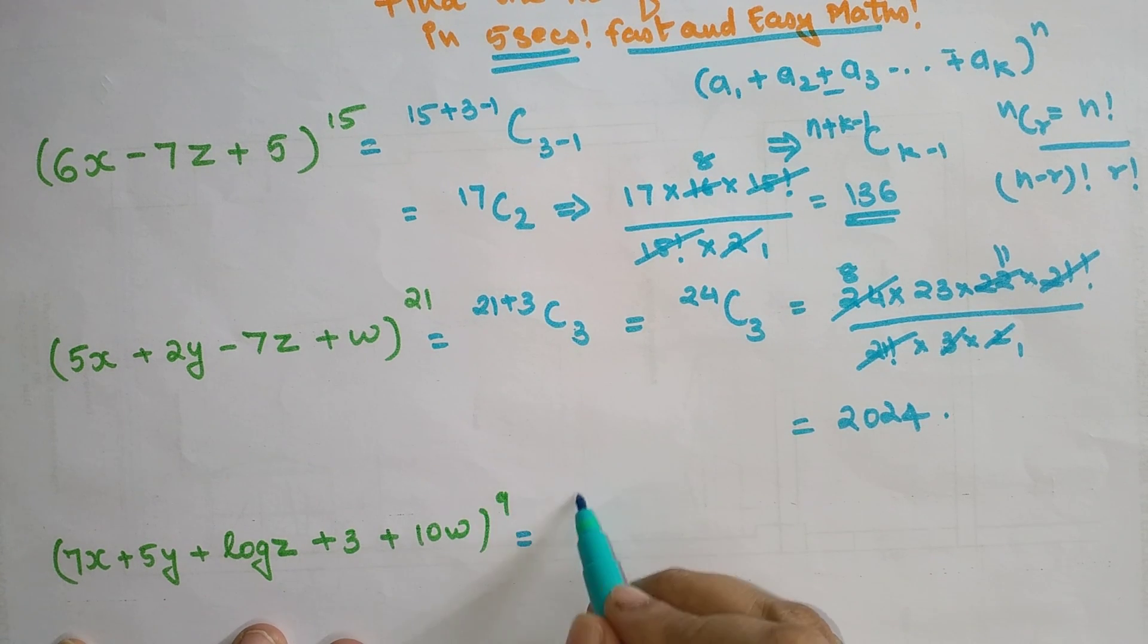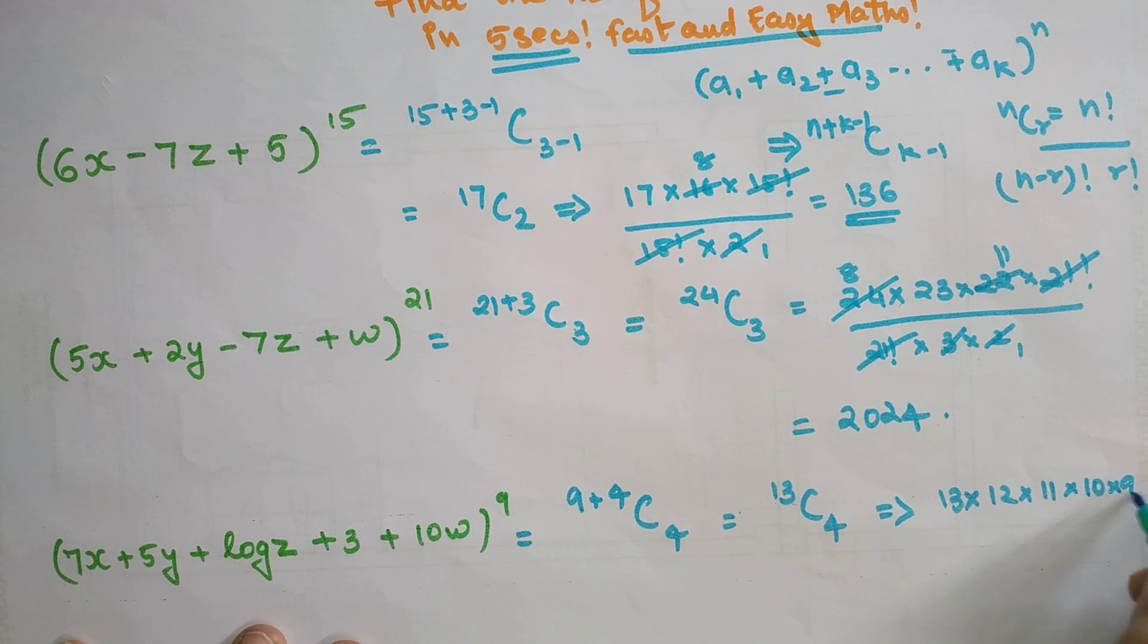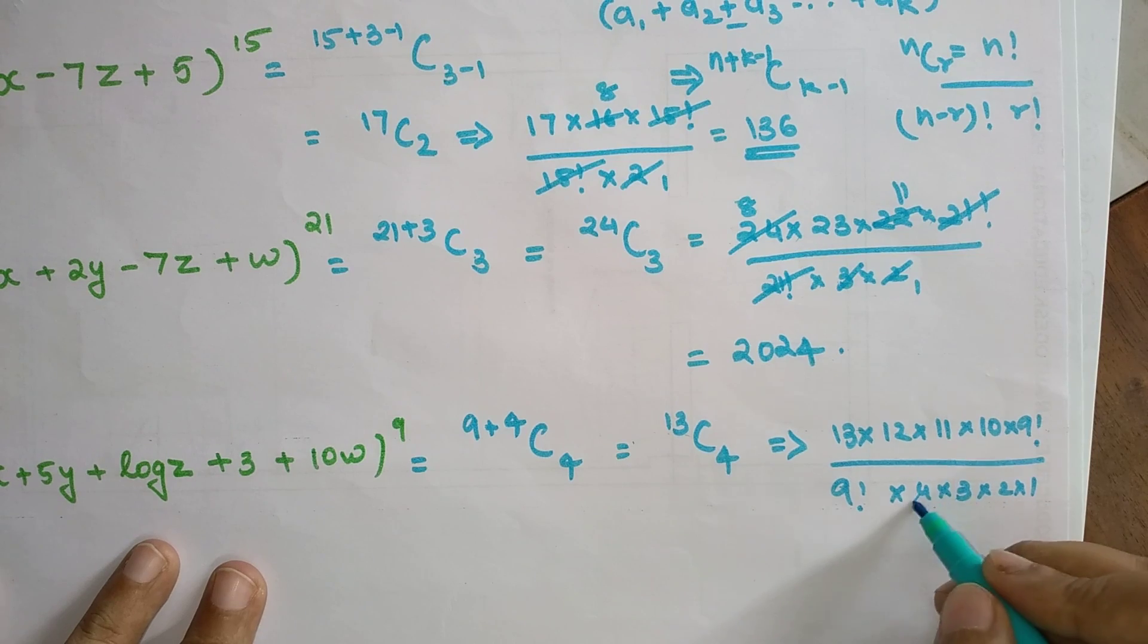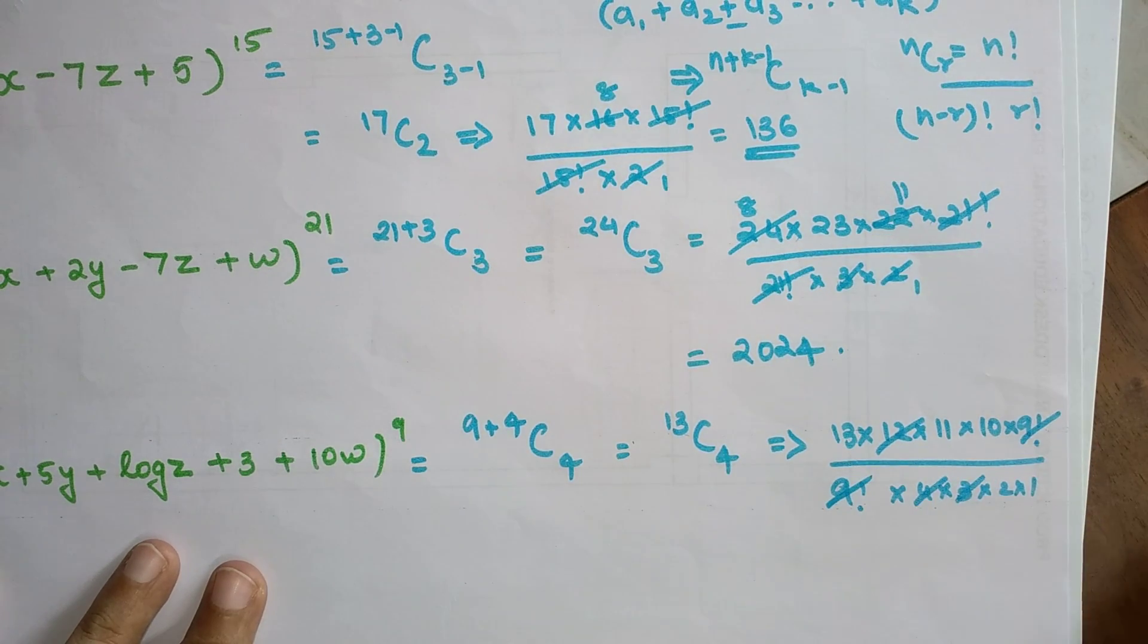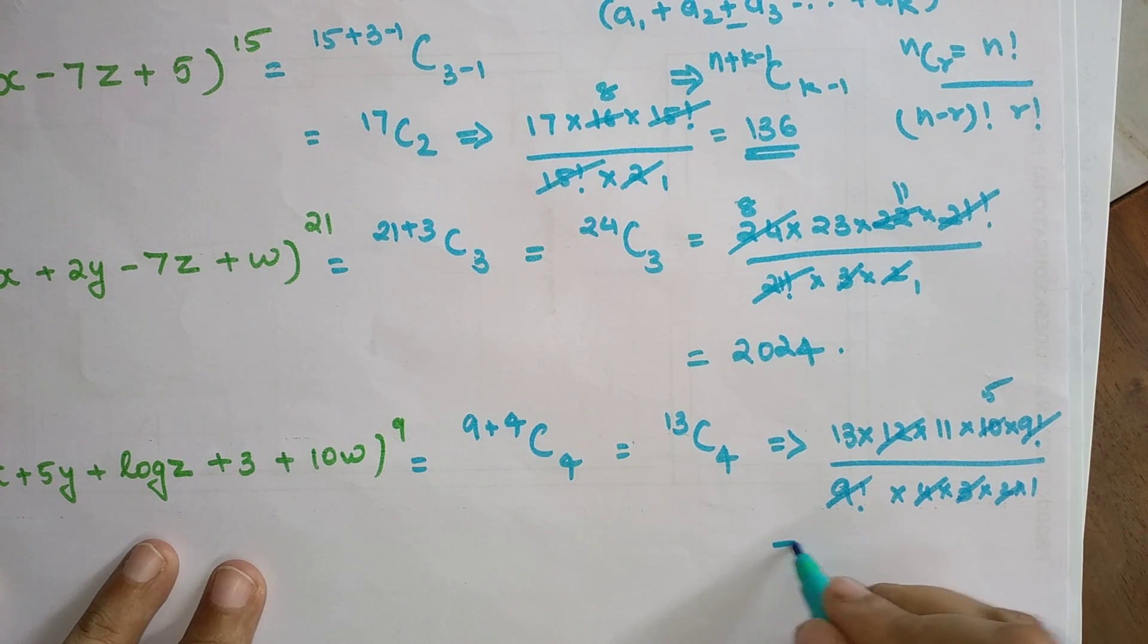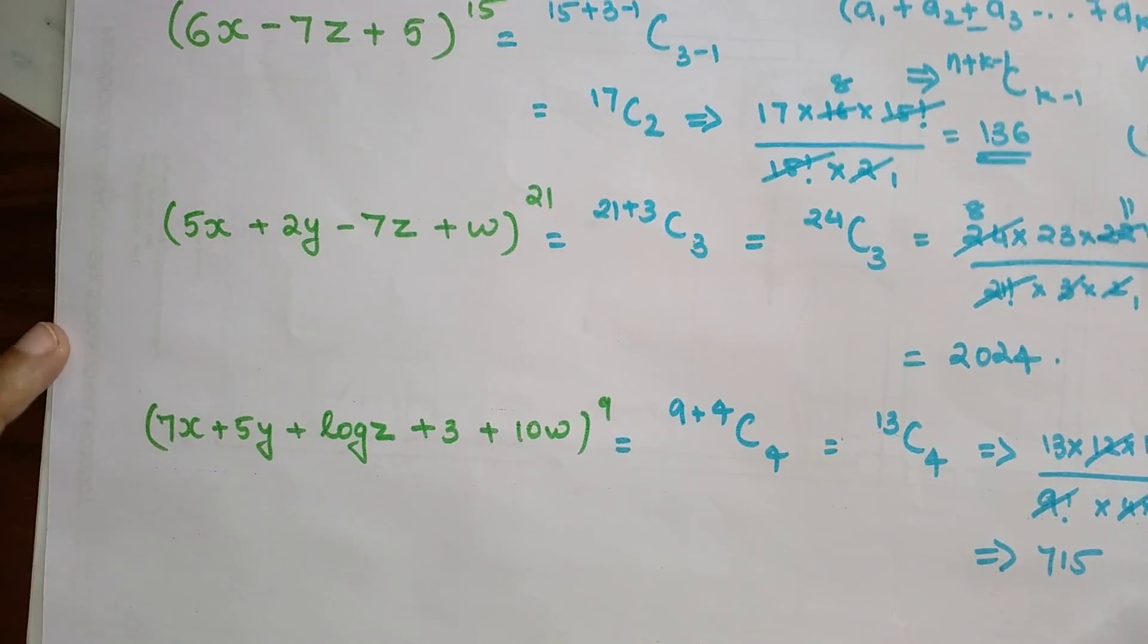So we are going to write 9+5-1 is 4, C4. So we are getting 13C4, that gets you 13×12×11×10×9! and this will be 9!×4×3×2×1. We know that 4, 4 and 3 will get cancelled, 9! is getting cancelled, and we will have to cancel this by 5. So we are getting 55×13, and that is nothing but 715. You saw how easy this was.